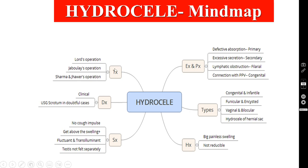Coming to the treatment - if it is a very large hydrocele, you can do Jaboulay's operation, which is incision and eversion of the sac. If it is a smaller hydrocele, we have to do what is called plication of the sac wall - that is Lord's operation. Jaboulay's operation is not done as much nowadays.